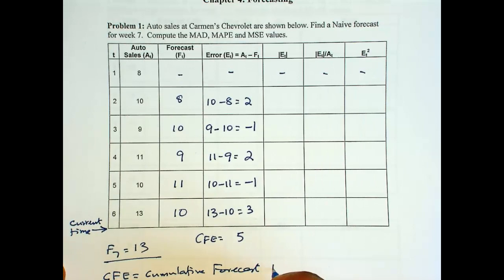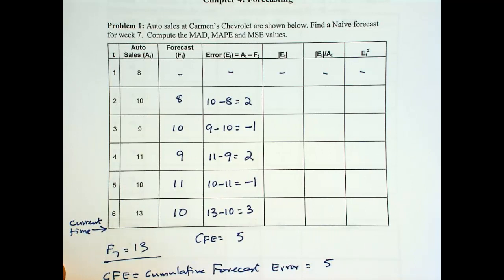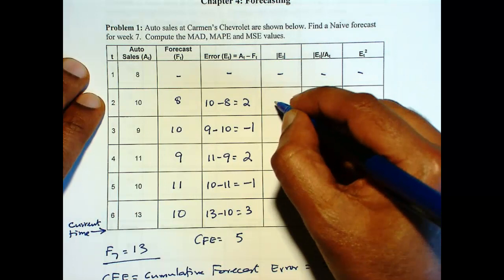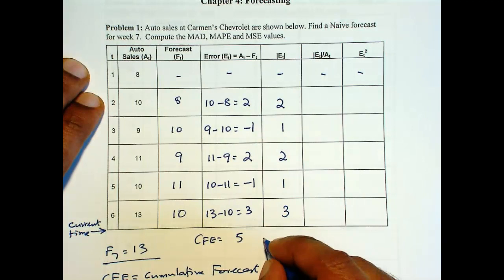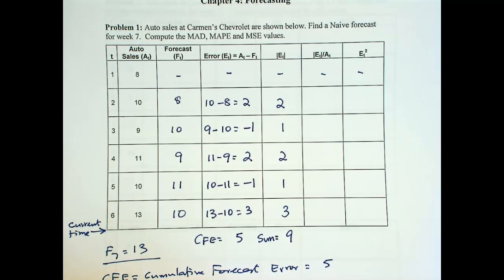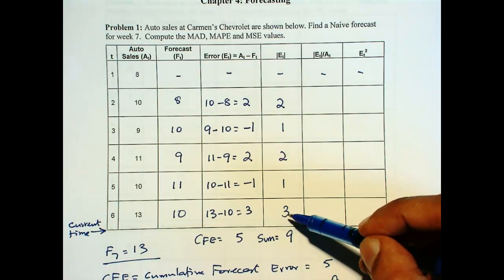But we want forecast error measure. So we don't want the positives to cancel out the negatives. So we take the absolute value. So then the sum here, error is 9. So mean absolute deviation or MAD for short is 9. So how many errors are there in this 9? 1, 2, 3, 4, 5. So 5. And that gives us 1.8.